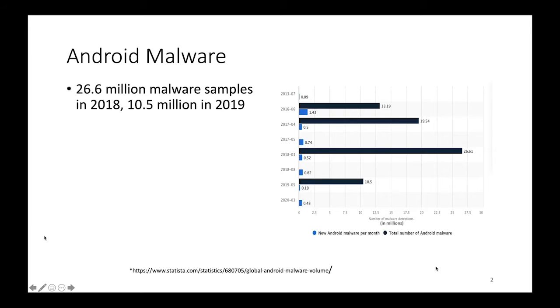Statista has reported that there were 26.6 million malware samples that were uncovered in 2018. In 2019, the number have gone down, but it's still significant. There were 10.5 million malware that were uncovered a year later. They also reported that, on average, there are 482,000 new malware that have been created per month, and majority of these malware samples are done using a technique called repackaging.